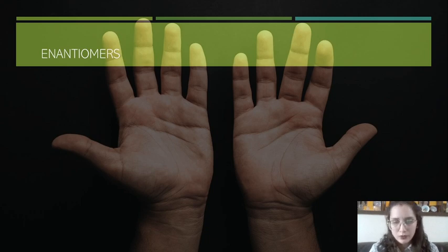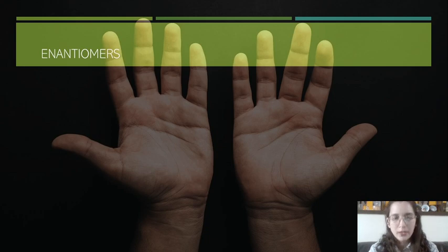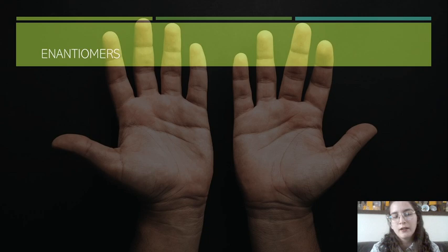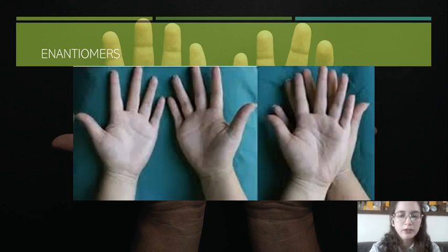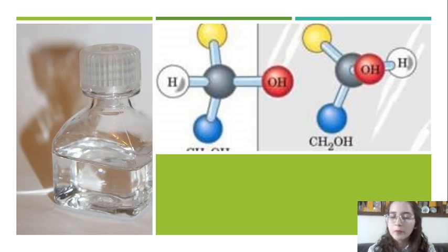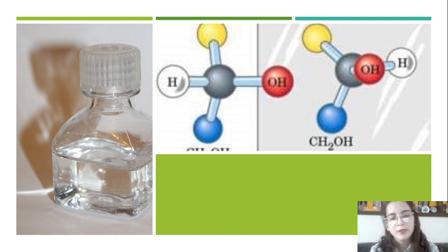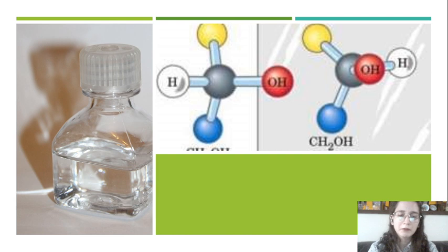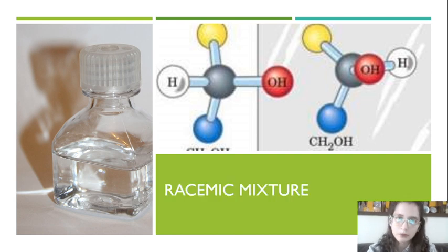We'll talk about enantiomers, which are non-overlapping mirror images. To explain this, we will use a very common example: the hands. Each hand has five fingers — one index, one middle finger, one thumb, one little finger, one ring finger, and the palm. One could say that both hands are the same, but if we place one over the other, they do not overlap — one does not cover the other because they do not have the same configuration. The same thing happens with enantiomer molecules. When we imagine observing a molecule in a mirror, we find that the first one does not overlap with its mirror image. So enantiomers are chiral molecules, which means that they exist in two forms, left and right. These two forms together are called a racemic mixture, which is a mixture in equal parts of both enantiomers, the right and the left.